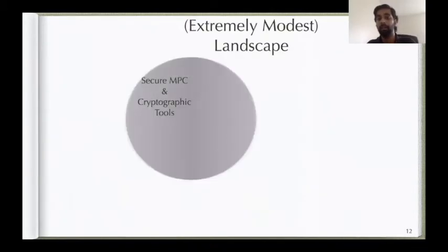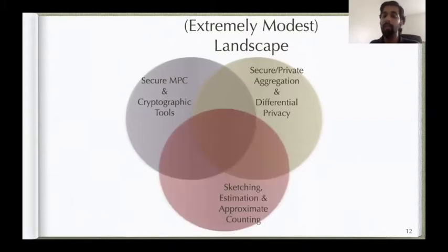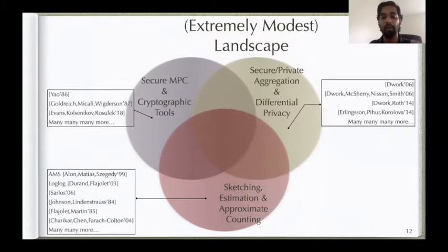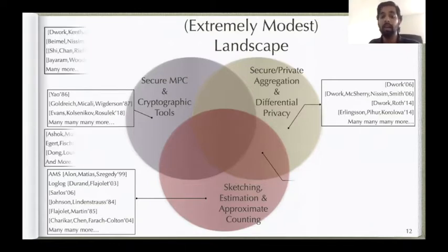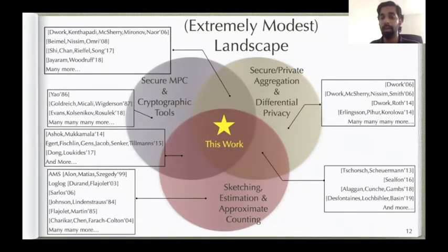Secure MPC, differential privacy, and sketching estimation are all very active research areas with a lot of prior work — though this list is by no means comprehensive. There has also been some work at the intersection of these individual areas. However, the novelty of our work is that we lie at the intersection of all three, benefiting from the advantages of each area.